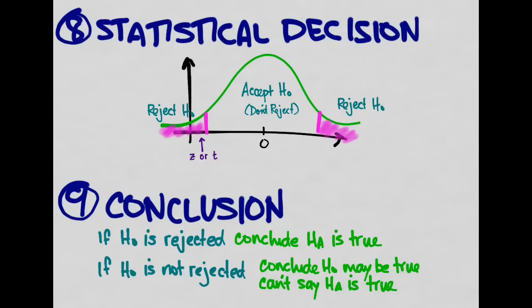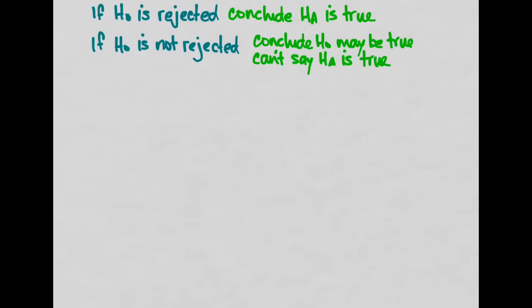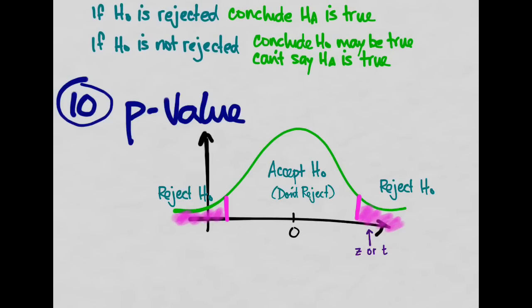Our final step is to calculate a p-value — the probability of getting a test statistic as extreme as the one we observed. We calculate that from our z-table or t-table to determine: if the null hypothesis were true, how likely is it that we got that test statistic? Was it 40%, 60%, or 80% likely, or was it very unlikely — 1%, half a percent, or even 0.1%?